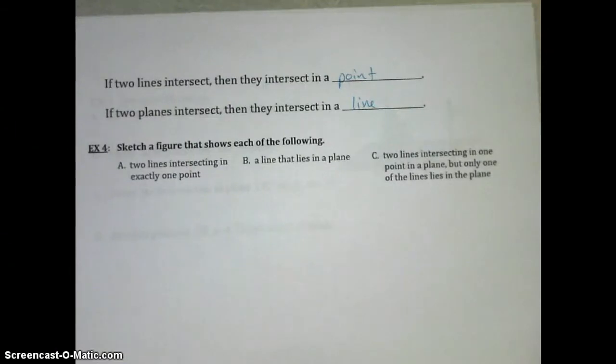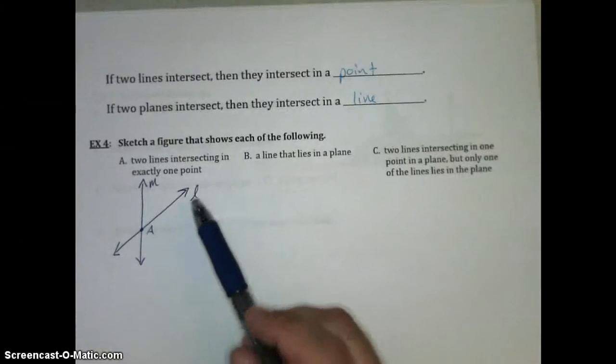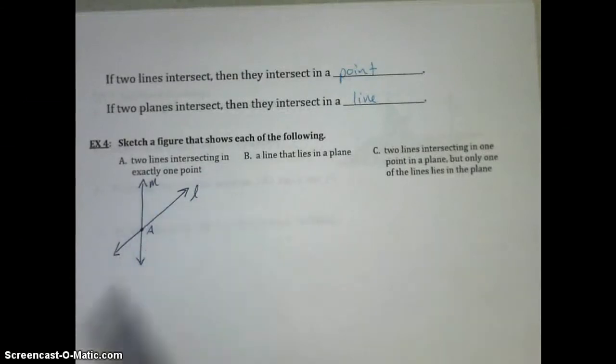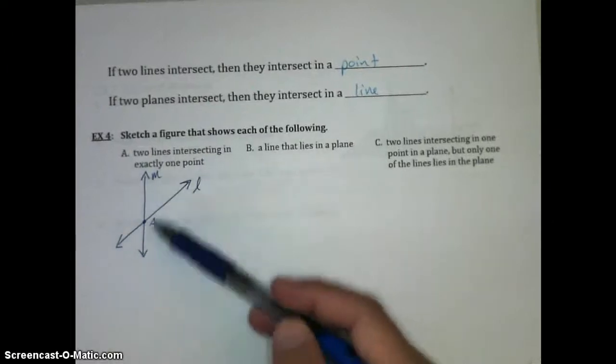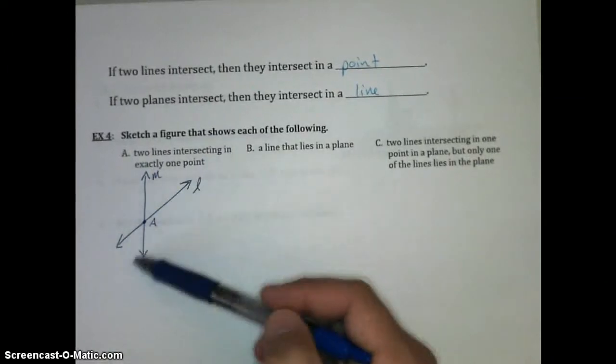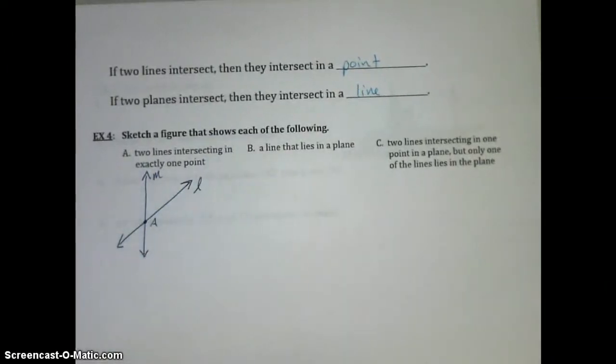We should get something like this. I've got two lines, M and L, intersecting at point A. It doesn't have to look exactly like that, but we should have two distinct lines, each labeled, with an intersection point that's also labeled.